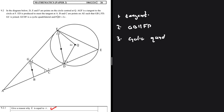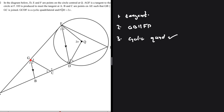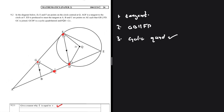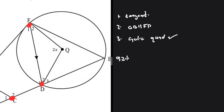Let's highlight the cyclic quad: it is GCDF — G, C, D, F is the cyclic quad. Now question 9.2.1: give a reason why angle E equals x. Let's see why that is the case. Angle E is right here, and it should be easy to see that angle Q on triangle DQF is 2x.